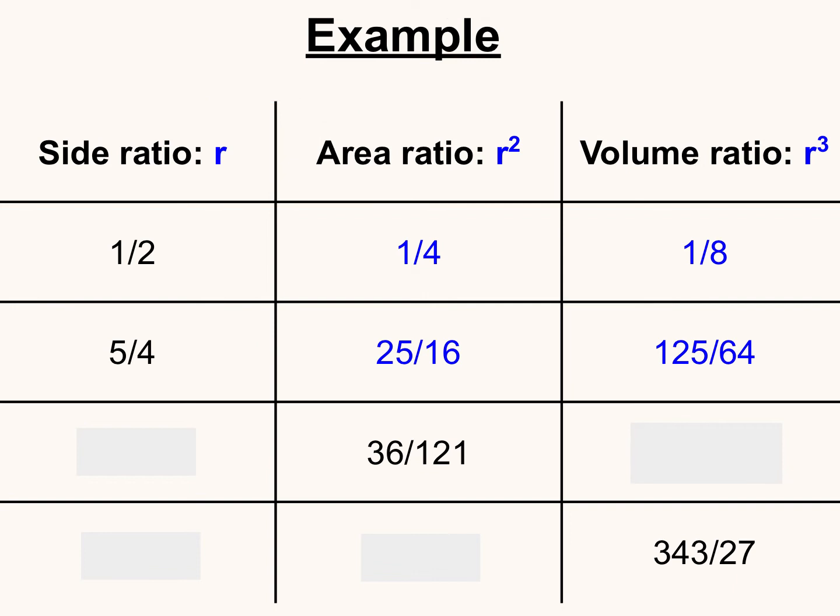Now for the next one, if I start with the area ratio, I need to go backwards and get rid of the square. To undo the square, we take the square root of whatever that area ratio was. So to go backwards here, we take the square root of 36 and the square root of 121, and we end up finding the side ratio. And recall that to go from the side ratio to the volume ratio, we end up cubing the side ratio. So six to the third power is 216, and 11 to the third power is 1,331.